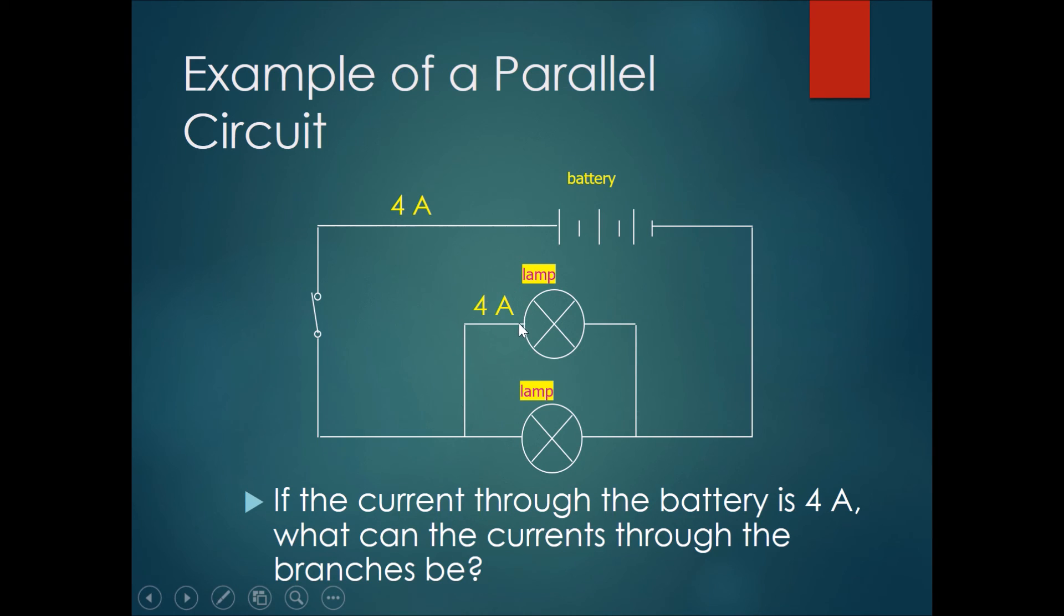If we say the current going through here was four amperes, then the amount of current going through the bottom branch would be zero amperes. This would normally mean that the lamp here is broken, and therefore all the current is going through the top branch.